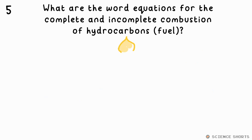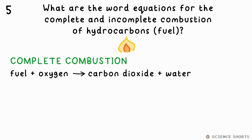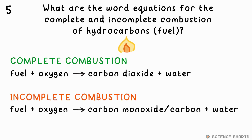Question 5. What are the general word equations for complete and incomplete combustion of hydrocarbons? Complete combustion happens when there's plenty of oxygen available — the hydrocarbon reacts with oxygen to make water and carbon dioxide. Incomplete combustion occurs when there's less oxygen available; it's not carbon dioxide that's made but carbon monoxide, which is poisonous, or even just carbon — that's soot.